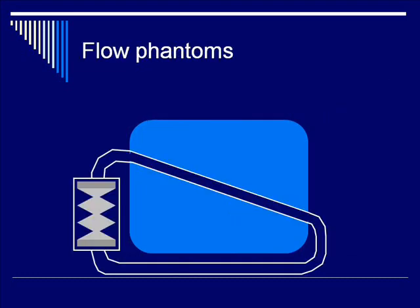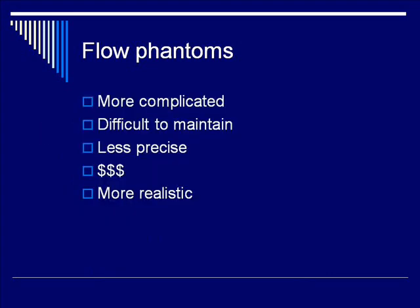A flow phantom consists of a hollow tube in a tissue-mimicking gel material connected to a pump. This is more complicated, harder to maintain, less precise, and more expensive than a string tester.